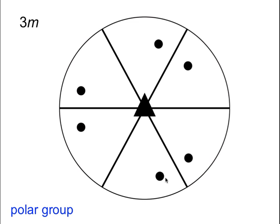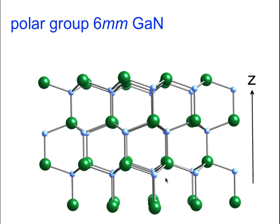So 3m is one polar group, but 6mm is also a polar group, and 6mm represents the gallium nitride that goes into your light emitting diodes in your bicycles and so on — it is a hexagonal form of gallium nitride. We did the diamond form of gallium nitride when I was introducing structures, but actually it is the hexagonal form which is used in light emitting diodes. The z-axis represents the six-fold axis and you can see that the structure at the top is not the same as the structure at the bottom.